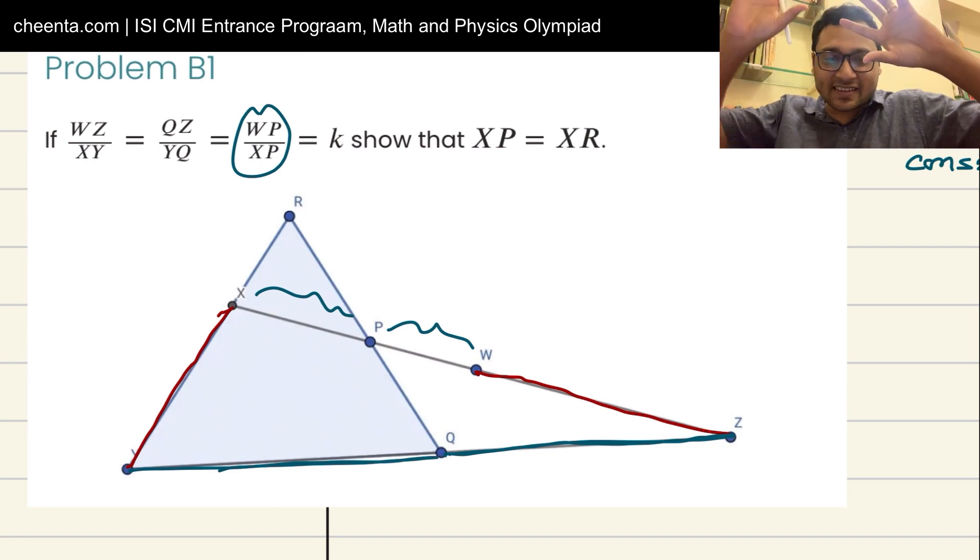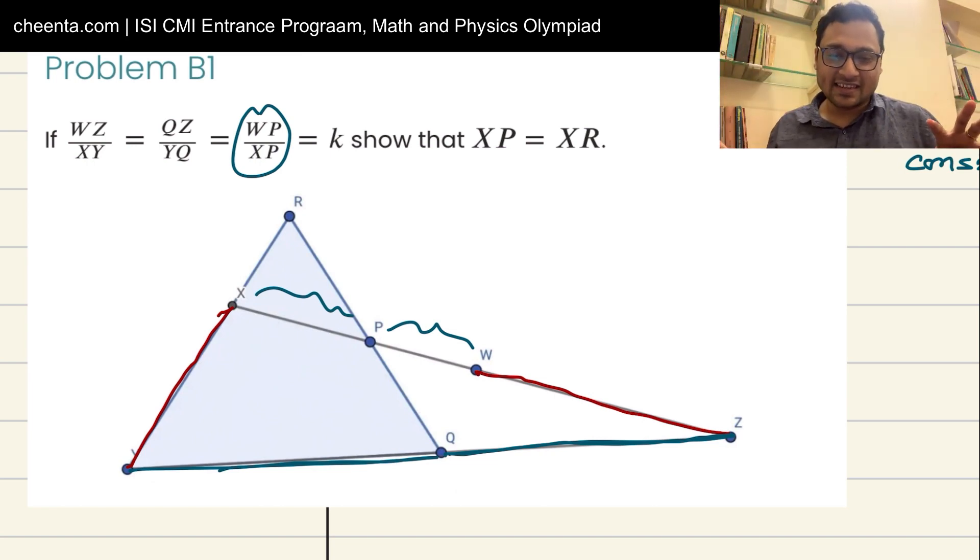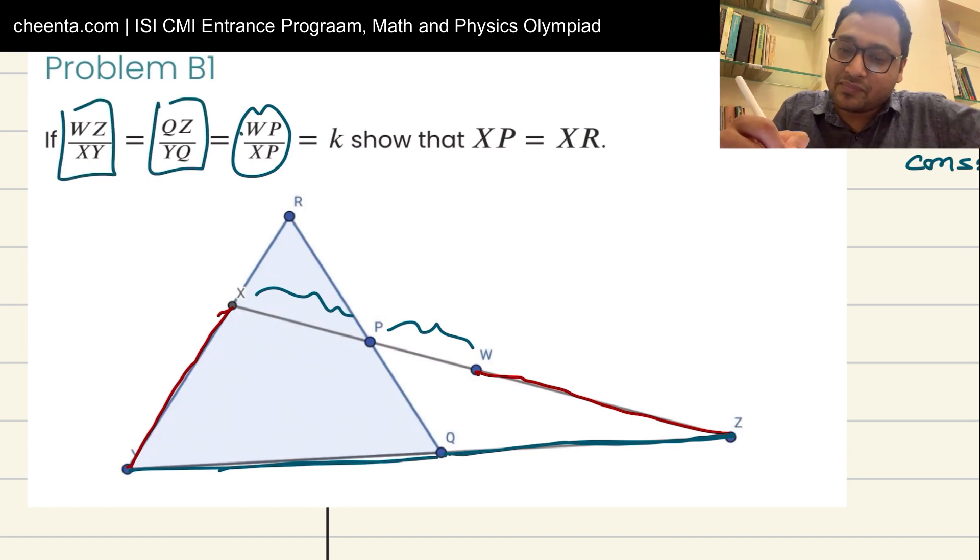So these segments are all in different places. When you see this sort of situation, when these line segments are all scattered around, the magical construction strategy may work. Of course, you have to have some experience with the process. Now it says that all of these ratios are equal to some number k, and our goal is to show that XP is equal to XR.